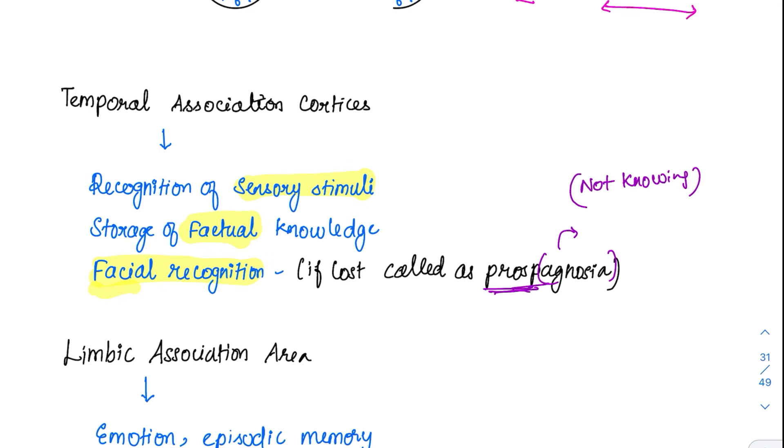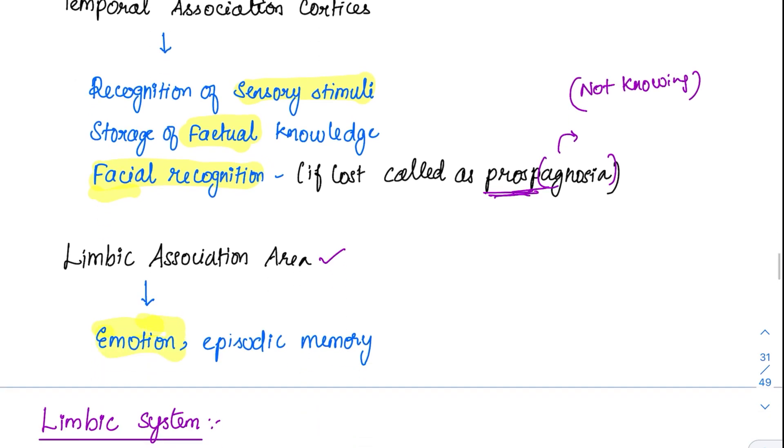There is no specific area called occipital association area. Why? Because the occipital maximum is taken by the visual cortex. Most of the occipital region is taken by the visual cortex. That's why the occipital area is not involved in it. Some books refer to it as parieto-temporo-occipital areas. And coming to the last association area, that is the limbic association area. The limbic system is very much essential for emotion. As we are going to see further in our discussion, it is very, very important for emotion. It is also involved in episodic memory.